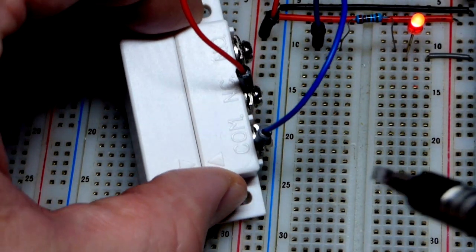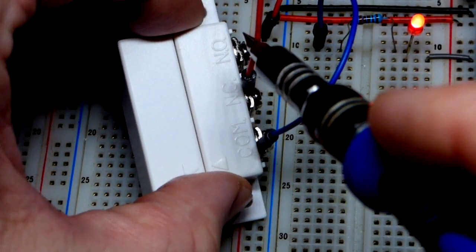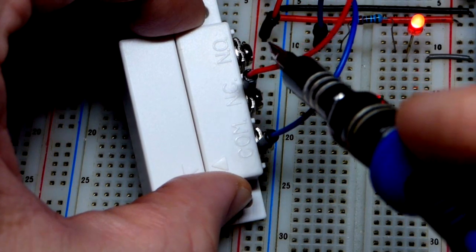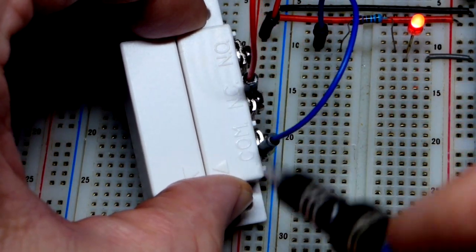In this video we're going to take a look at a really cool component. This is a magnetic switch. You can see right here it says NC and then COM.